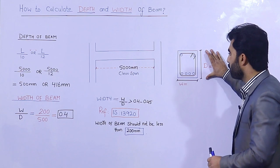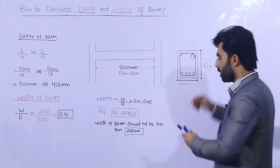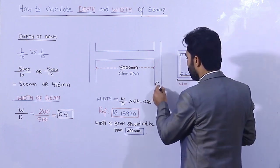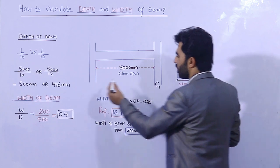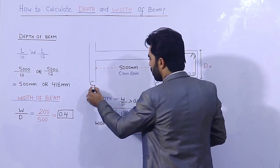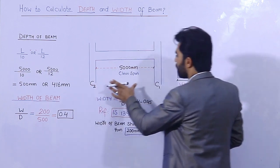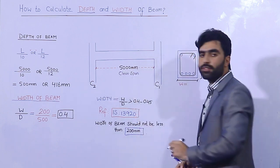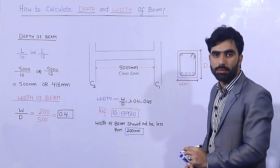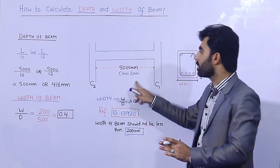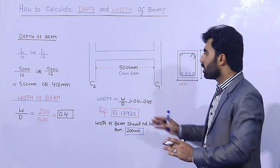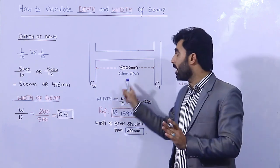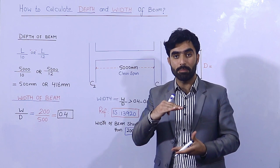As you can see, this is the section of a beam. This is column 1 (C1) and column 2 (C2). The clear span between the two columns is 5000 millimeters, or 5 meters. So if we have the span between two columns as 5000 mm, what should be the depth and width of the beam?